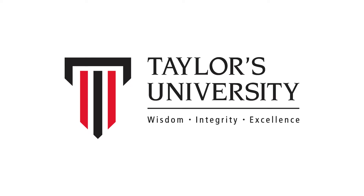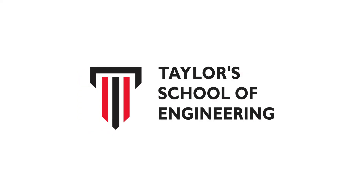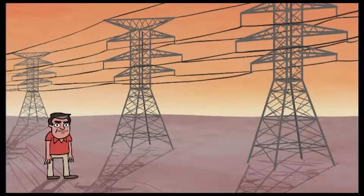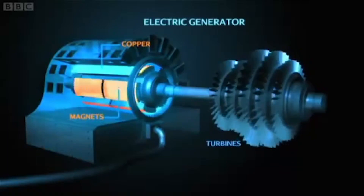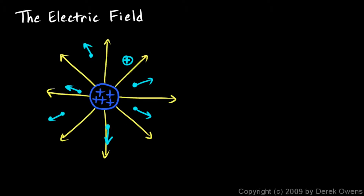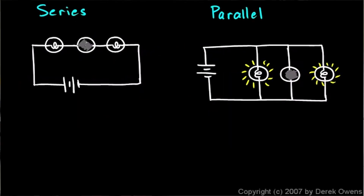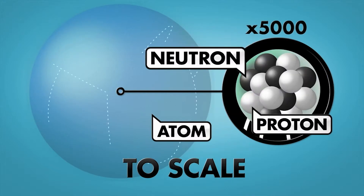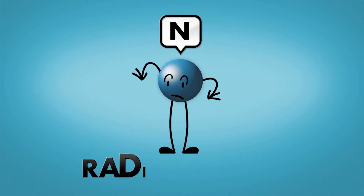Hi everyone, I'm Wong Wai Yin and I'm the lecturer for the course of Physics II in the Foundation of Engineering Program. Basically in this course, what you are going to learn is on electricity — you have to learn about what is an electric field, what is a DC circuit, what is electromagnetism, nuclear atoms, and you have to learn a brief one on radioactivity.